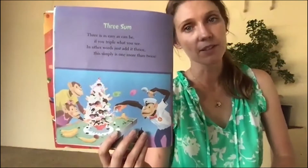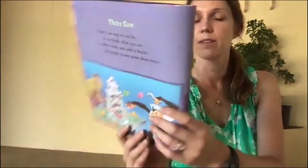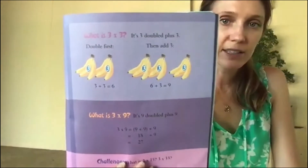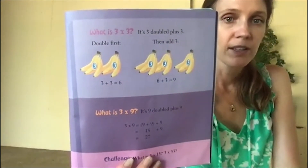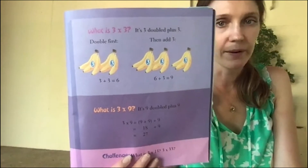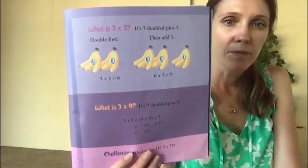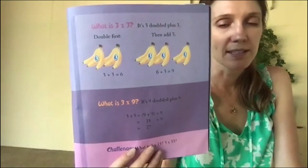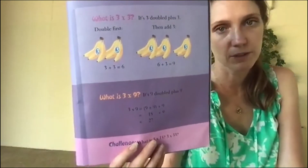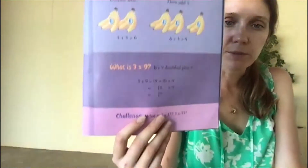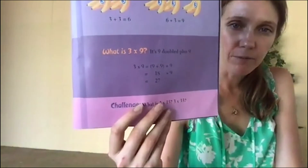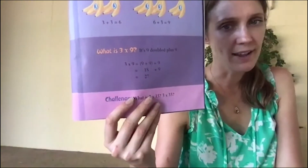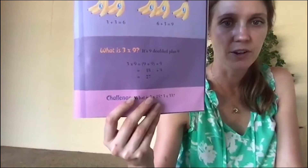So what is 3 times 3? It's 3 doubled plus 3 — you double first, then add another one. So 3 plus 3 is 6, and 6 plus 3 is 9: that's 3 plus 3 plus 3. And what's 3 times 9? It's 9 doubled plus 9 — add two 9s and then another 9: 18 plus 9 equals 27.